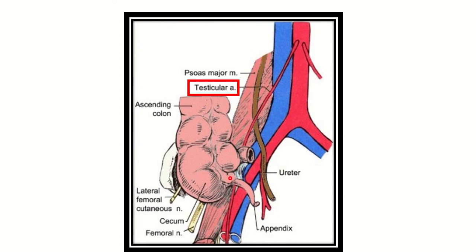The cecum is located over the psoas muscle. A vessel — the testicular artery — is very close to the cecum; it passes just at the side of the cecum. So during mobilization of the cecum in the medial direction, there is a chance of injury to this vessel, the testicular artery.